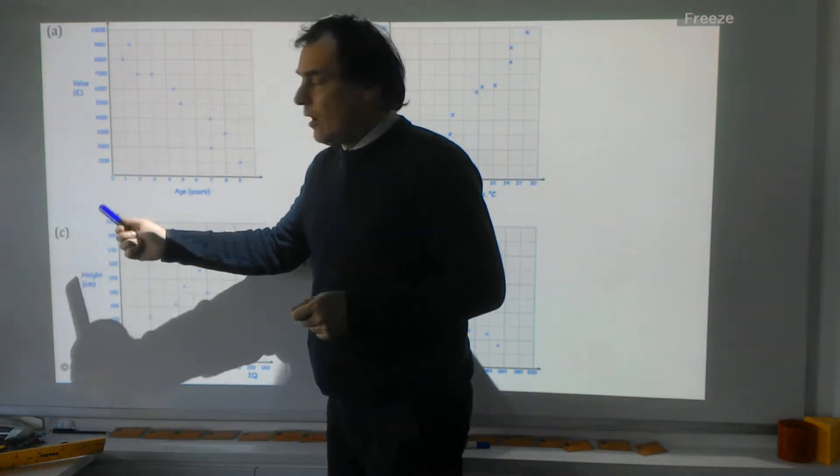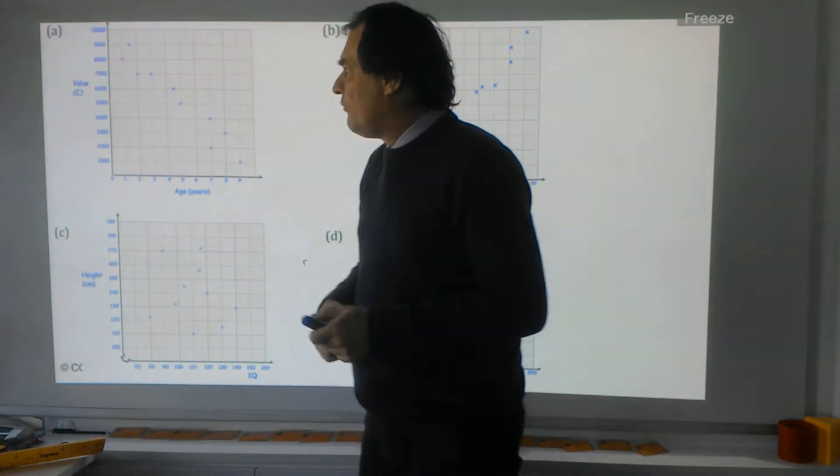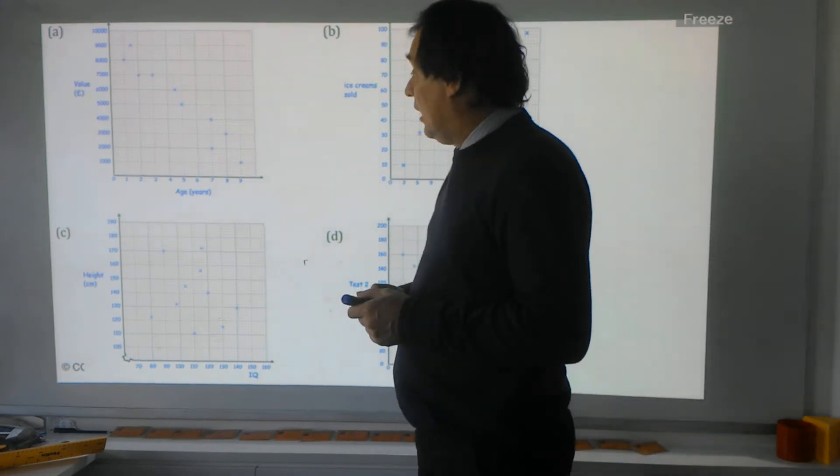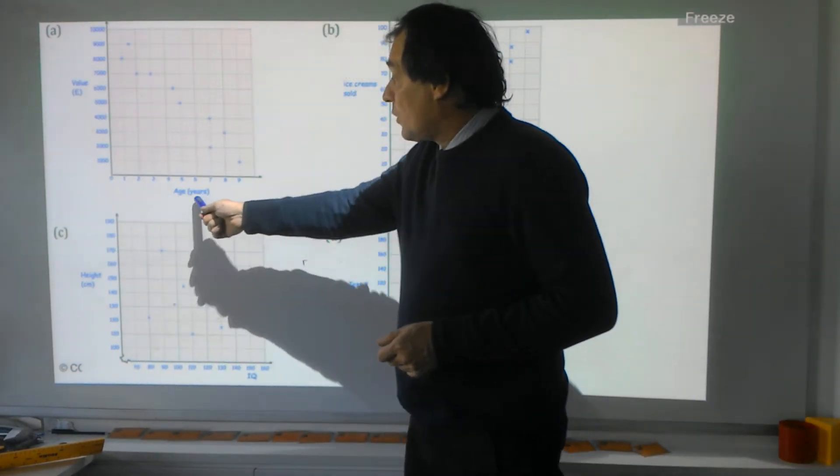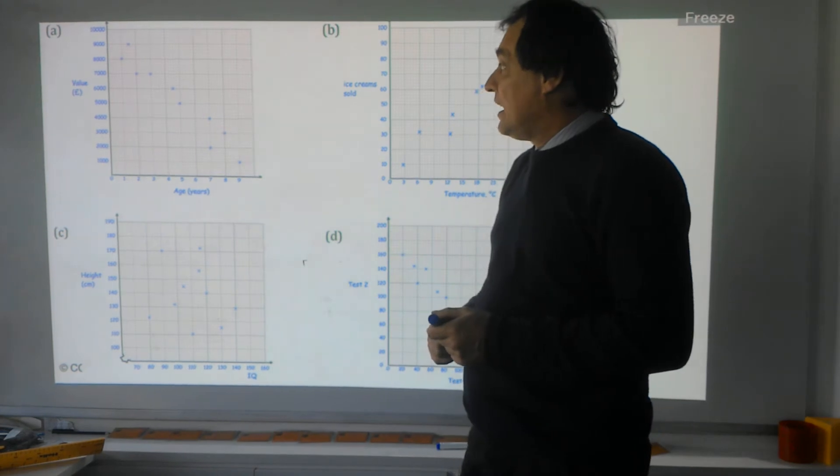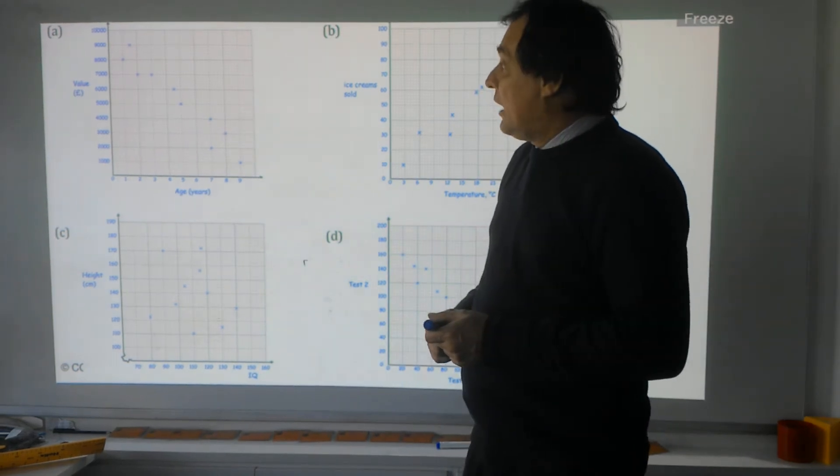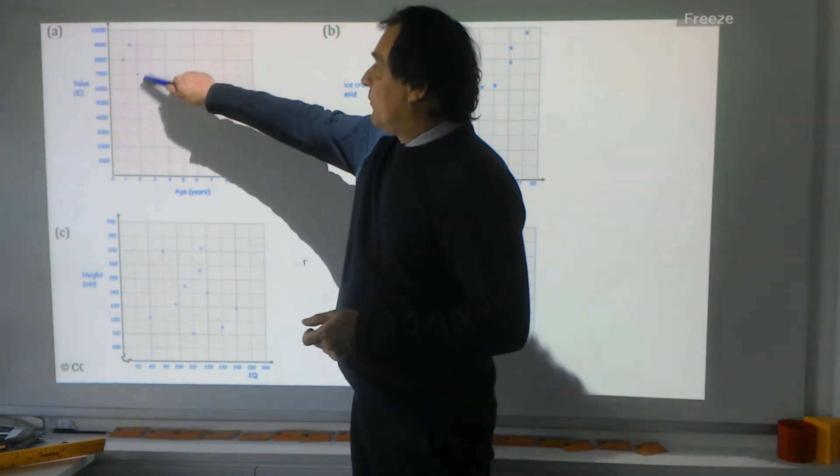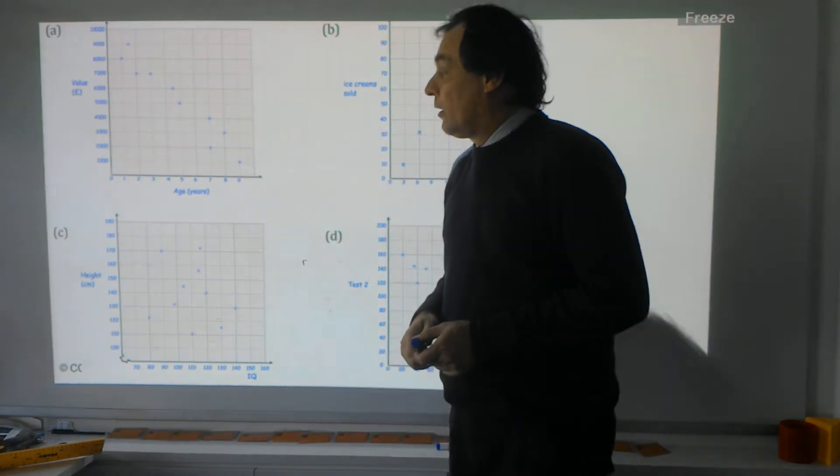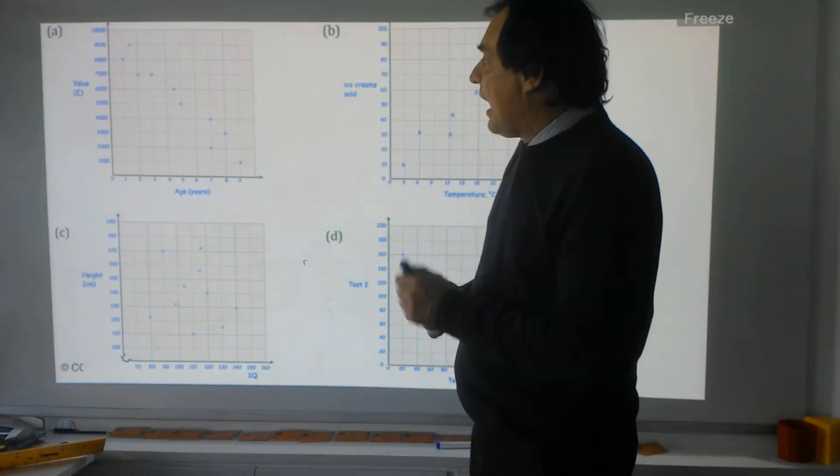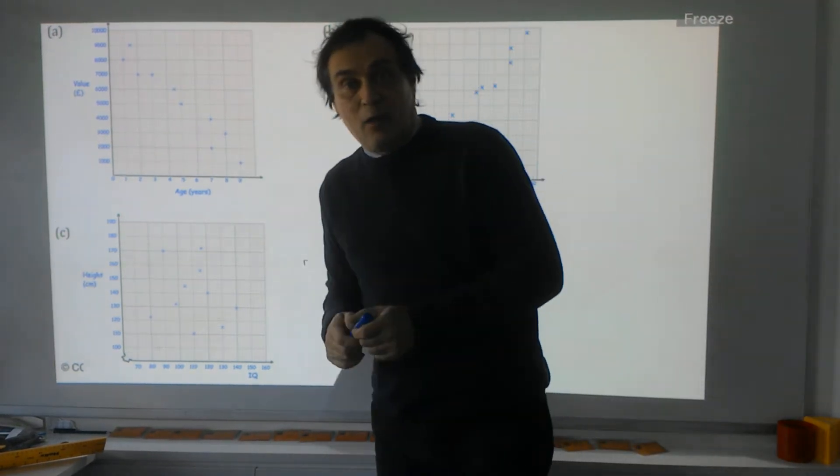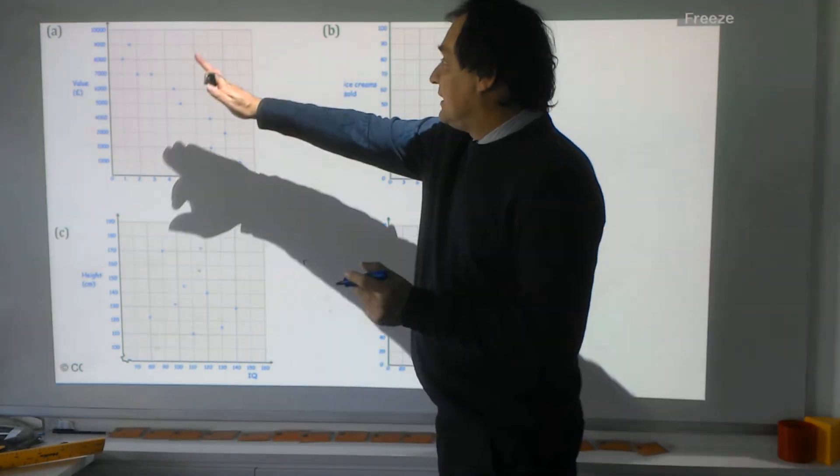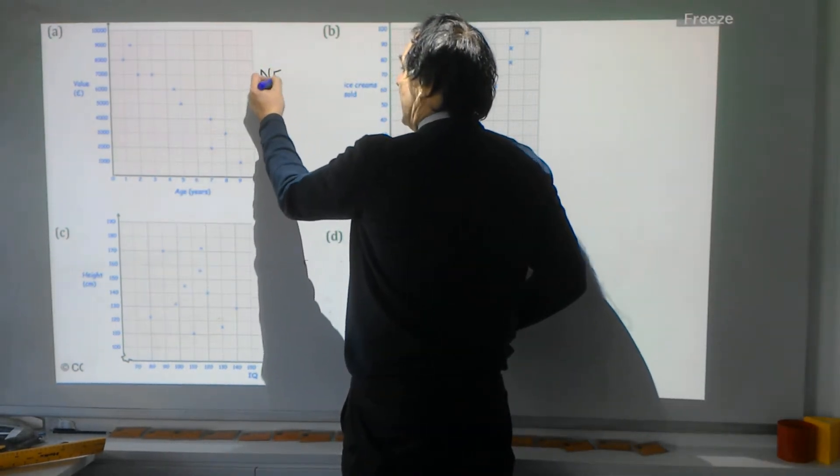Here we've got on this axis going up, the value of a car, and as we go along, we've got the age of the car in years. As you can see, we've got all these crosses plotted along here on the graph, and they're going in a downhill manner. If it's going downhill, that's called negative.